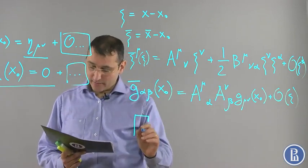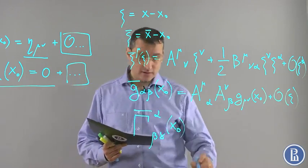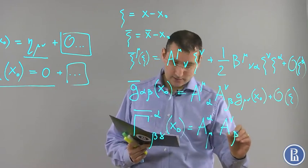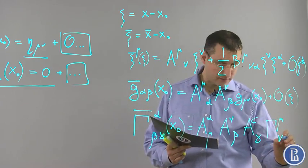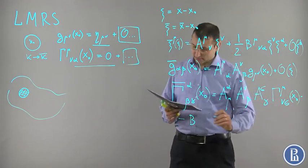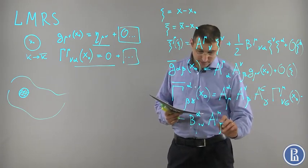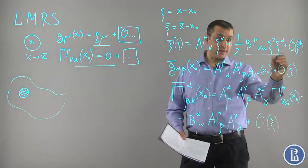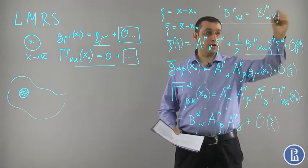The transformation rule for Γ is as follows: Γ̄^α_βγ(x0) = A^α_μ A^ν_β A^σ_γ Γ^μ_νσ(x0) − B^α_μν A^μ_β A^ν_γ + O(ξ). Note that from this, B is symmetric: B^μ_αν = B^μ_να. That one has to bear in mind.